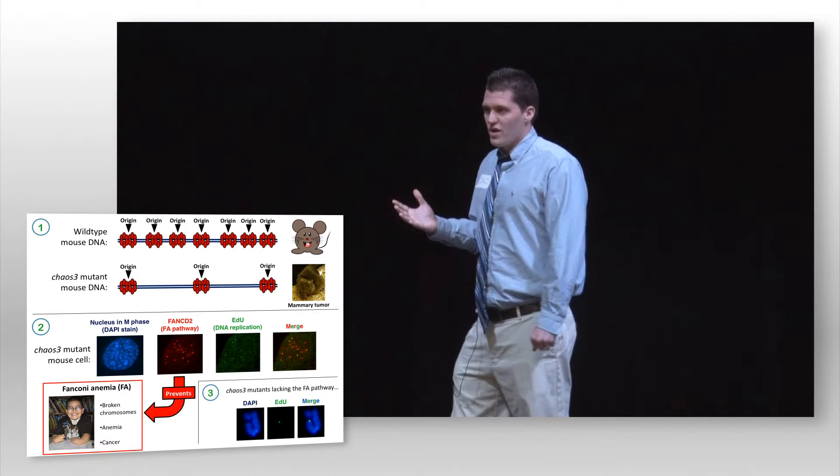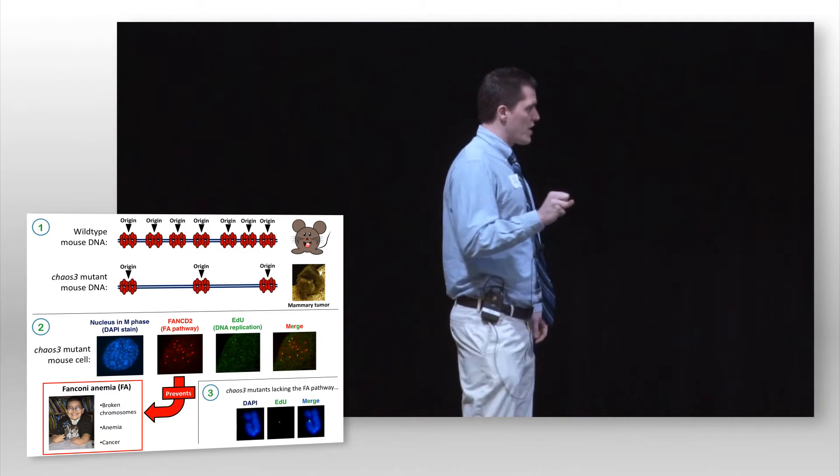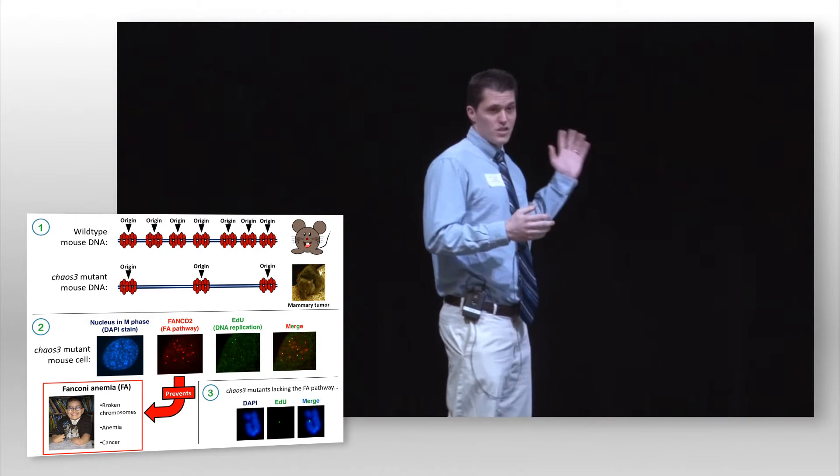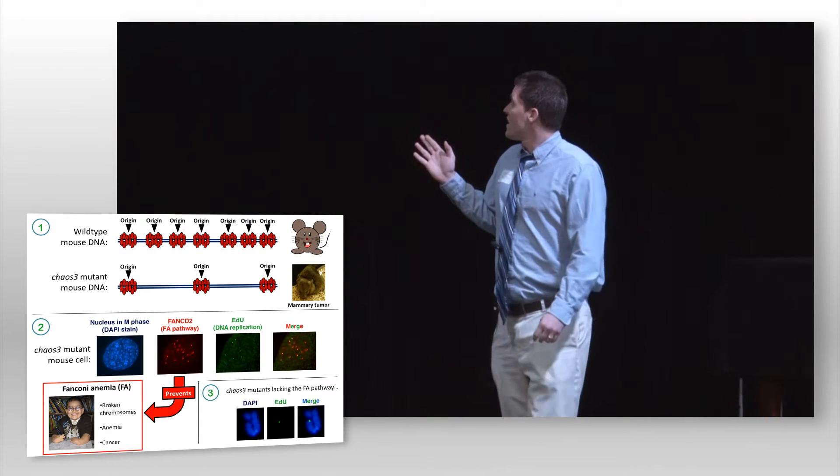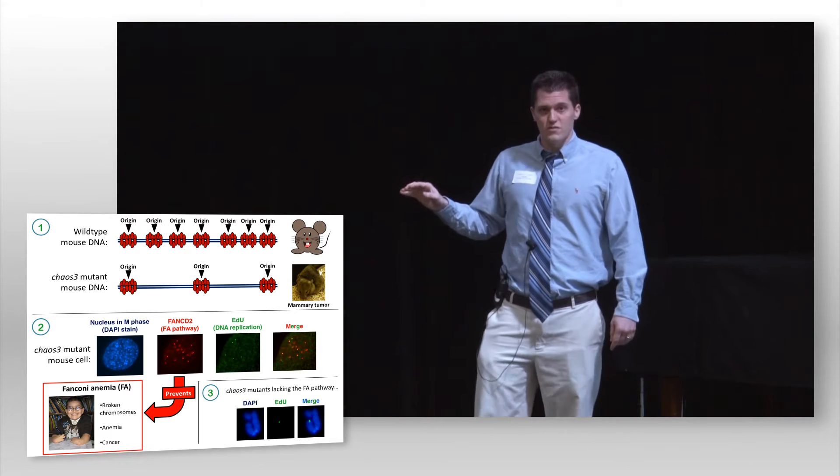So to investigate what was really going on here, I examined cells from these mice by fluorescent microscopy, which is shown in number two. This is a CHAOS-3 cell that has already gone through replication and has entered M phase to prepare for cell division.